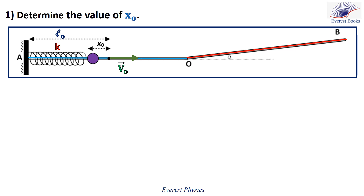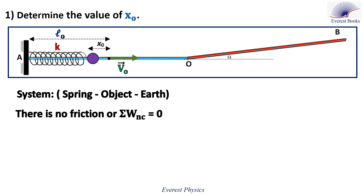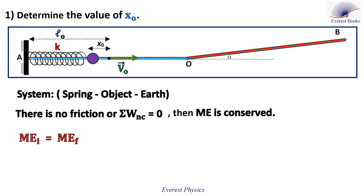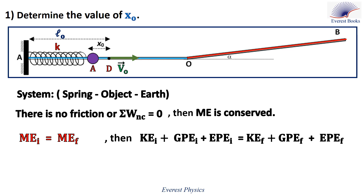x0 can be determined using the principle of conservation of mechanical energy. Consider the system: spring, object, and Earth. Since there is no friction, the net work done by non-conservative forces equals zero, so mechanical energy is conserved: ME initial equals ME final. ME initial corresponds to position A where the spring is compressed by x0, and ME final corresponds to position D where the spring returns to its natural length and the object leaves with velocity V0. We write: KE plus GPE plus EPE at initial equals KE plus GPE plus EPE at final.